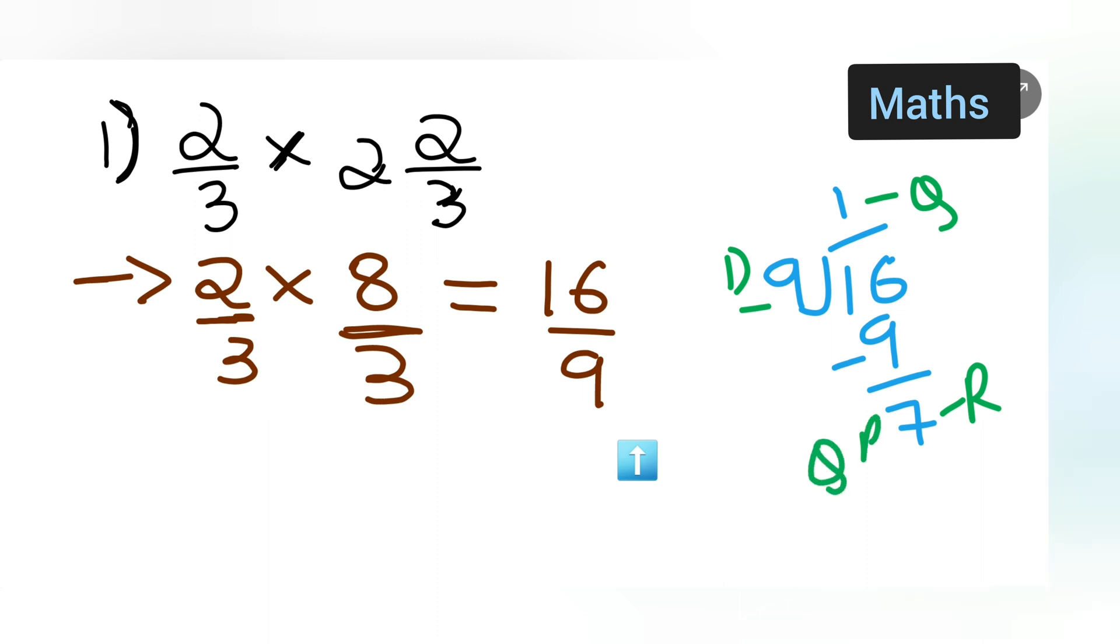It should be in which form? Quotient, remainder upon dividend form. You can write down Q is 1. This is equal to 1, and then your quotient is 1, then remainder is 7 upon 9.